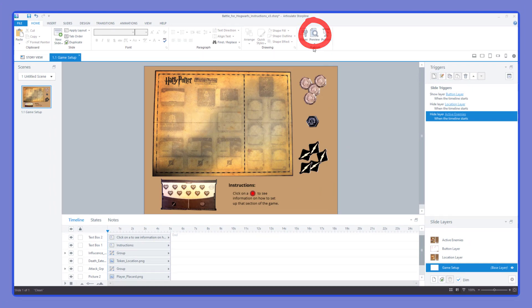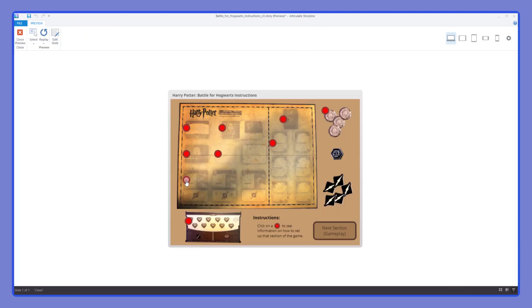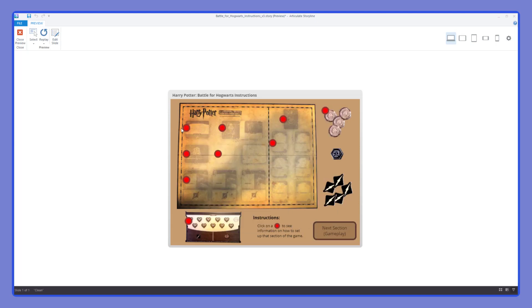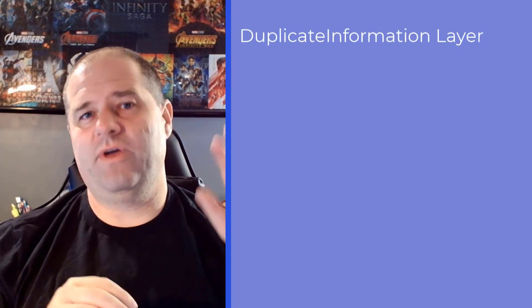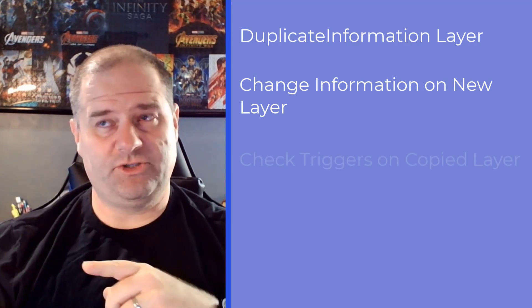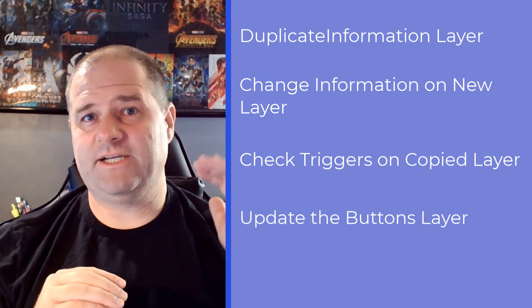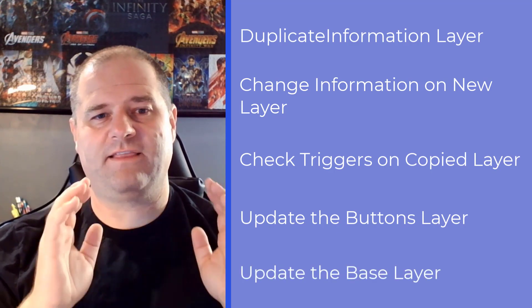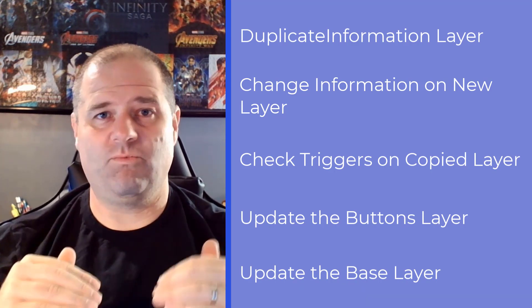In preview you can see we're clicking between the two buttons having the layers appear and closing them so the main buttons reappear. To finish this project we've got about nine other areas to build, and we'll do each just like the active enemies layer. Duplicate the layer, change the images and text, confirm the triggers copied over, then go to the buttons layer and add triggers to show the correct information layer and hide the button layer. On the base layer, make sure each new layer is hidden at the start of the timeline.